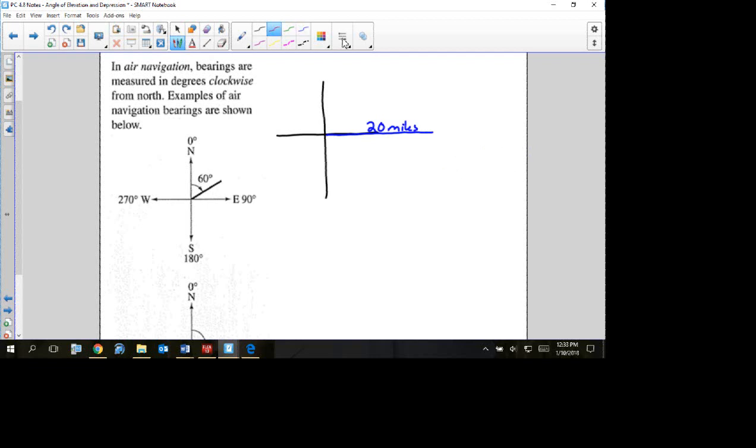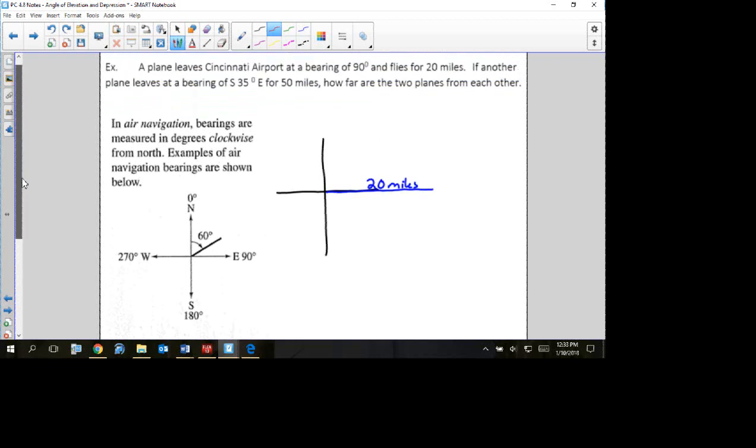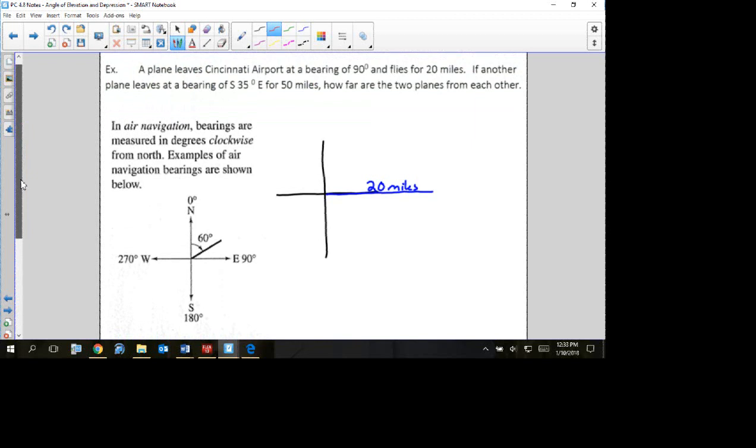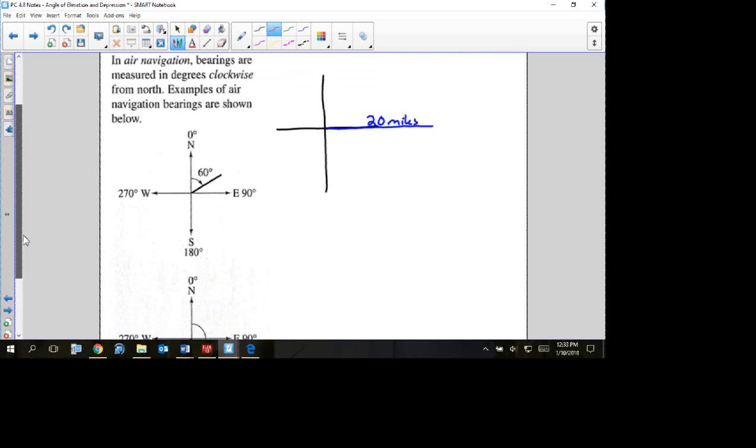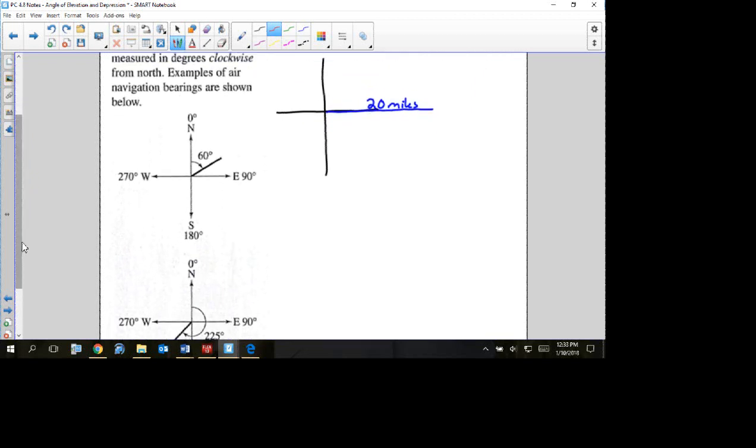My second plane is going south 35 degrees east for 50 miles. So same airport, we're now going to go south and then we're going to go 35 degrees east for 50 miles.